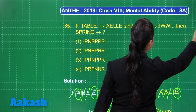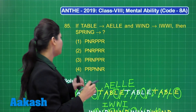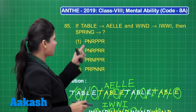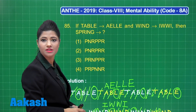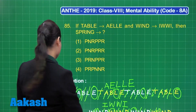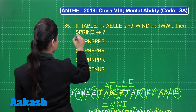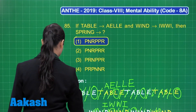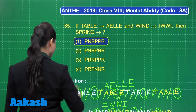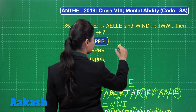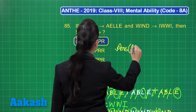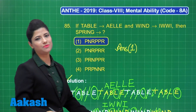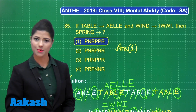Out of the options given, PNRPPR is found in option number 1. So the correct answer for this question is option number 1. You can definitely mark your answer as option 1. I hope it is clear. Let us proceed to the next question.